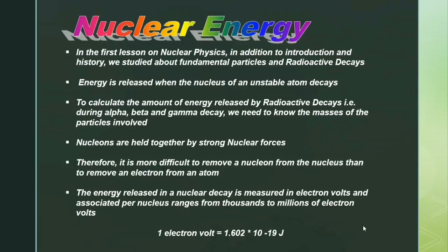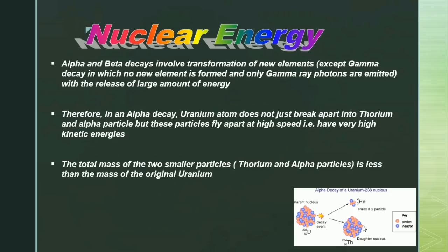One electron volt is equal to 1.602 × 10⁻¹⁹ joules. Alpha and beta decays involve transformation of new elements, except gamma decay, in which no new element is formed and only gamma ray photons are emitted with the release of a large amount of energy.